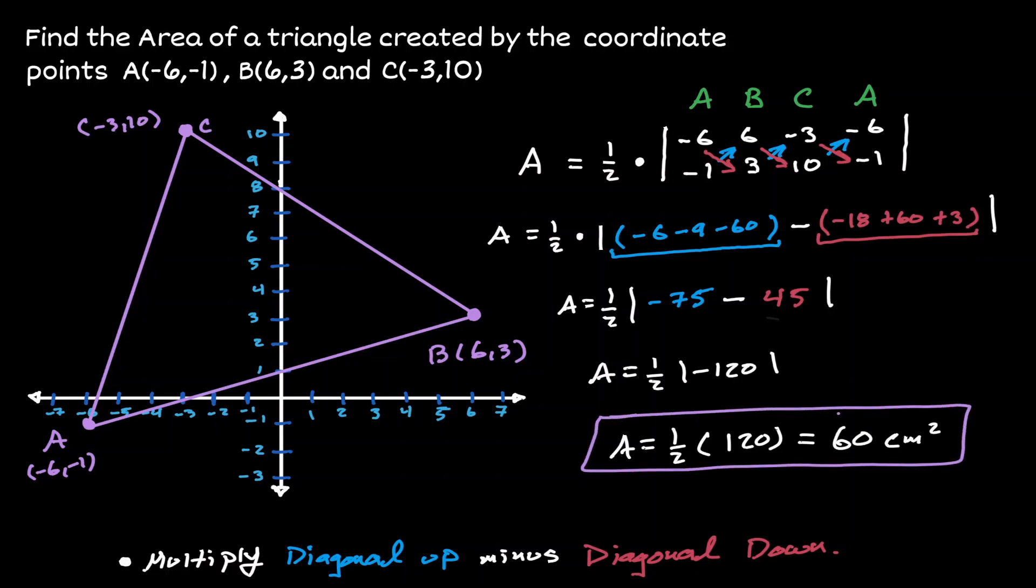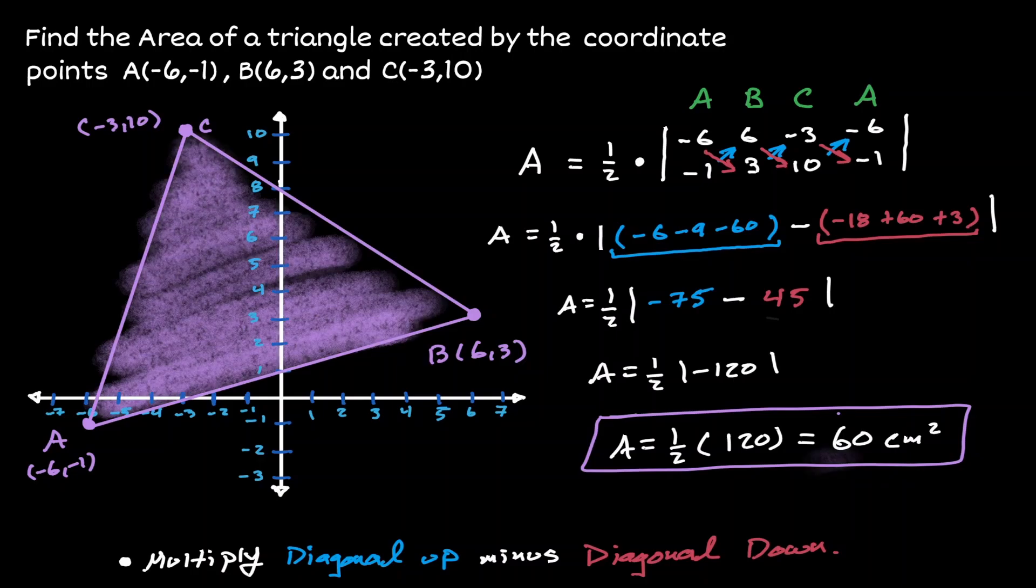So what we have concluded is that if we find the area inside this triangle, that area is going to be equivalent to 60 units squared. The reason why I decided to call it centimeters is because I'm going to assume that the distance from one point to the other was all given in centimeters.